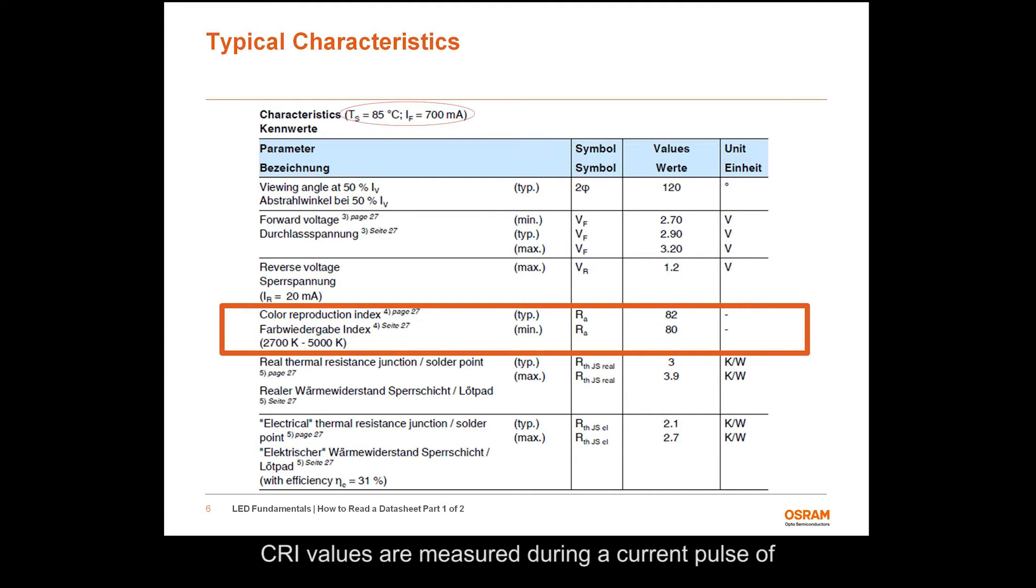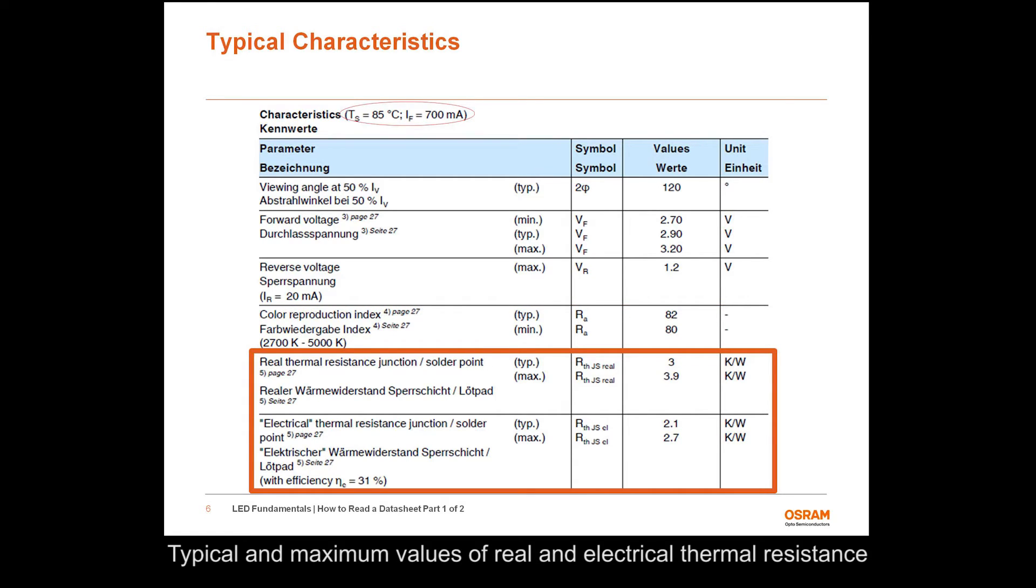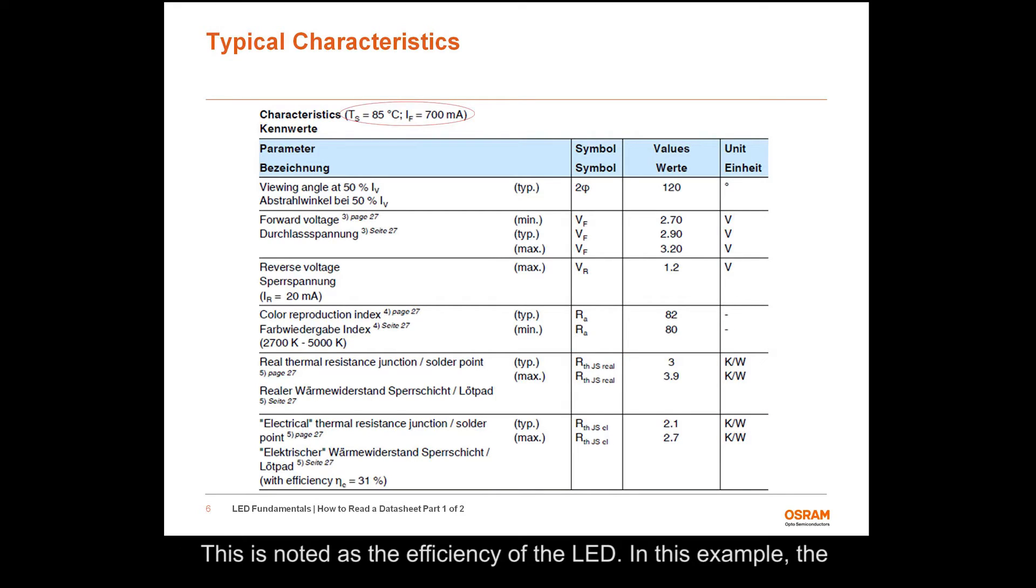CRI values are measured during a current pulse of 25 milliseconds, with an internal reproducibility of plus or minus 2. Typical and maximum values of real and electrical thermal resistance from junction to solder point of the LED package are listed in kelvins per watt. The electrical thermal resistance value represents the junction to solder point resistance as if the total input power is converted to thermal energy. The real thermal resistance takes into account that a portion of the input power is converted into light energy. This is noted as the efficiency of the LED. In this example, the Aslan square is noted as being 31% efficient, which means that 31% of the input power is converted to light output.